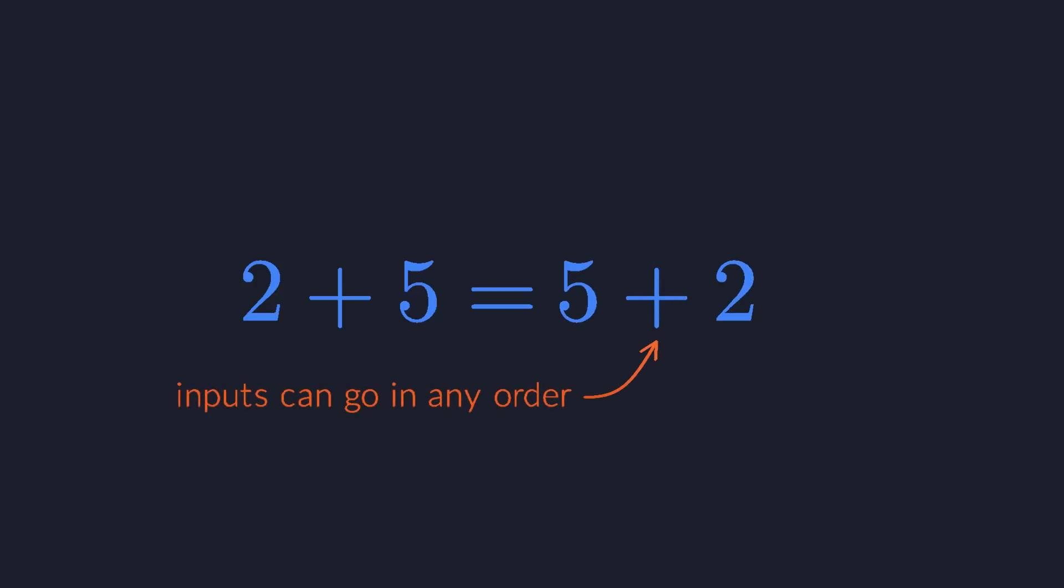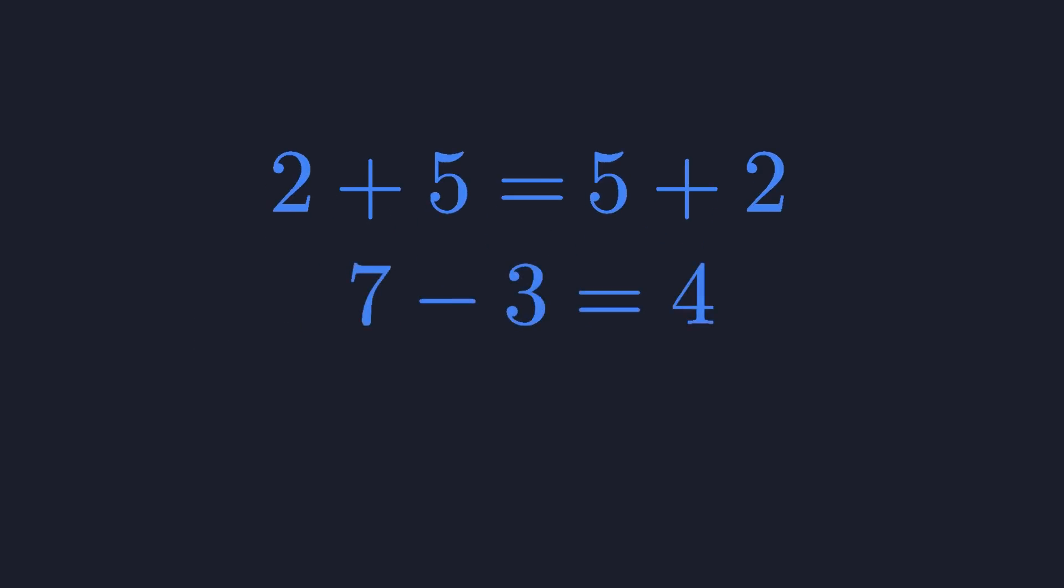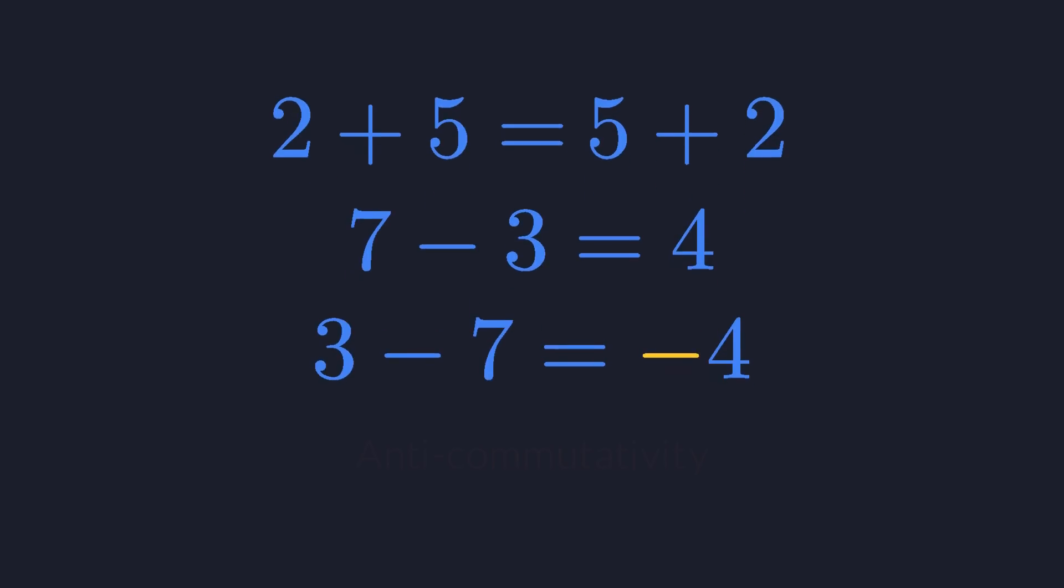The plus operator doesn't care in which order it takes its inputs. For the minus operator, this is no longer true. When you swap the order of the inputs, the result becomes the exact opposite of what it was before. This is called anti-commutativity.